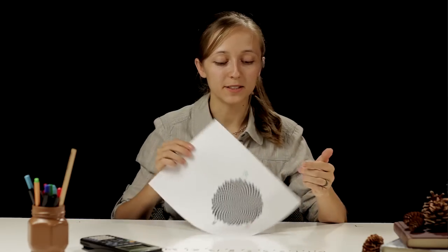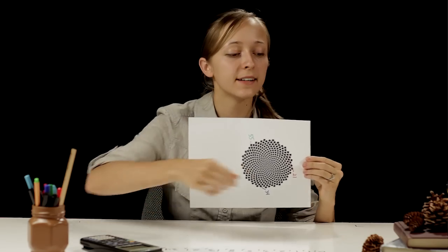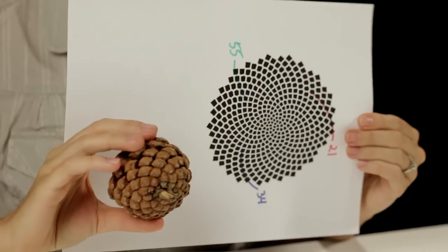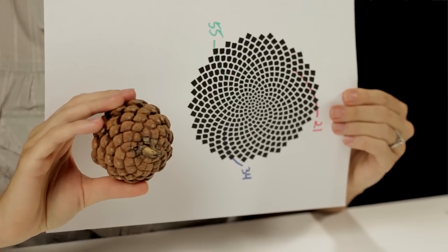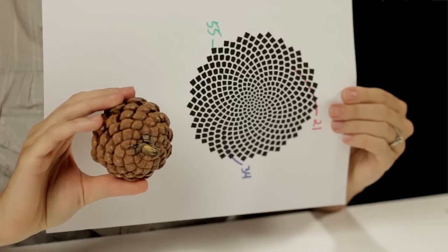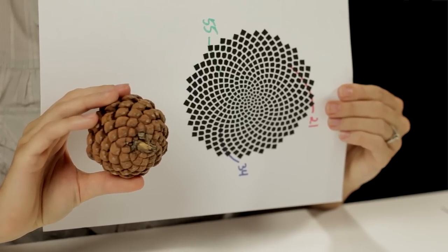Now that you know what a Fibonacci spiral is and what it looks like, take a look at this pine cone. Do you see how it resembles the same spirals? The same is true of almost all pine cones. If you count their spirals in any direction, you will get a Fibonacci number.